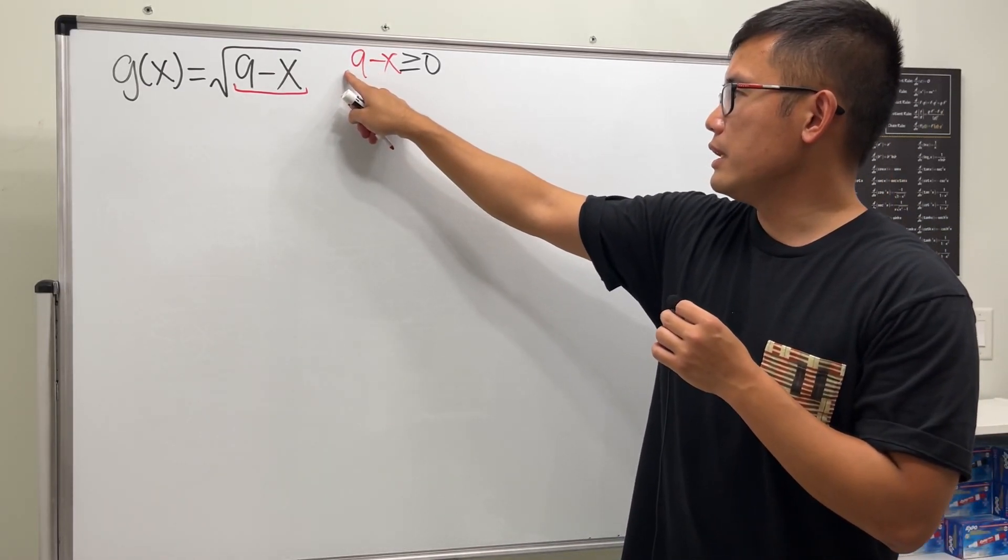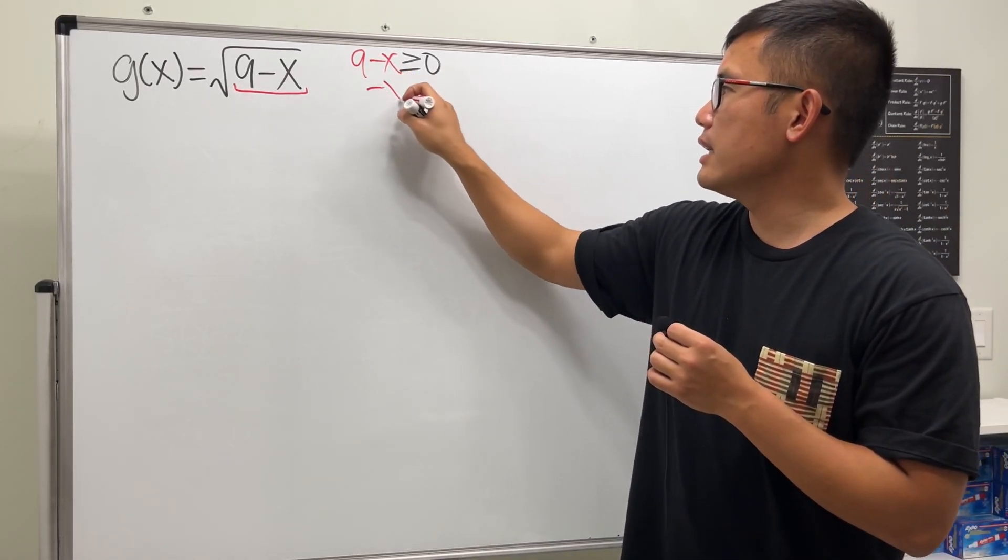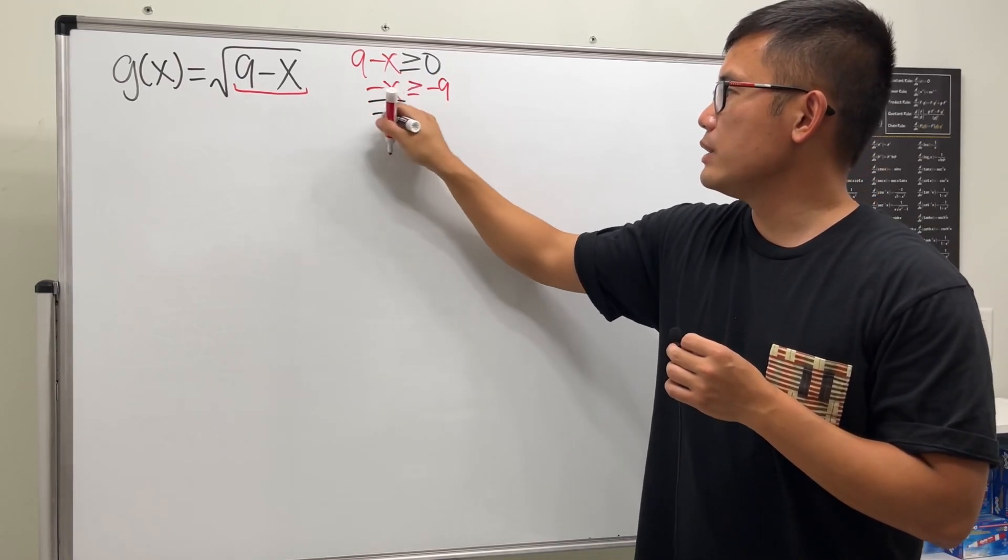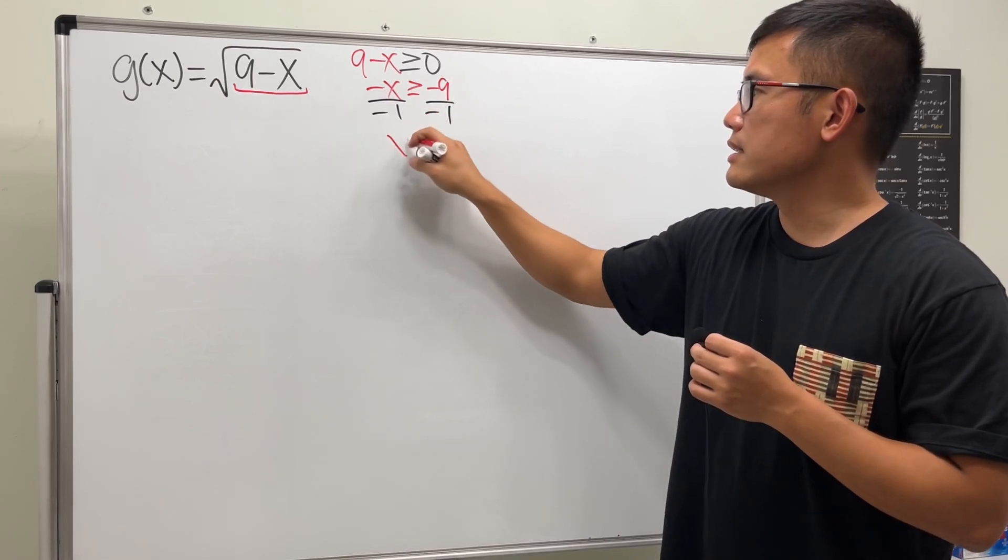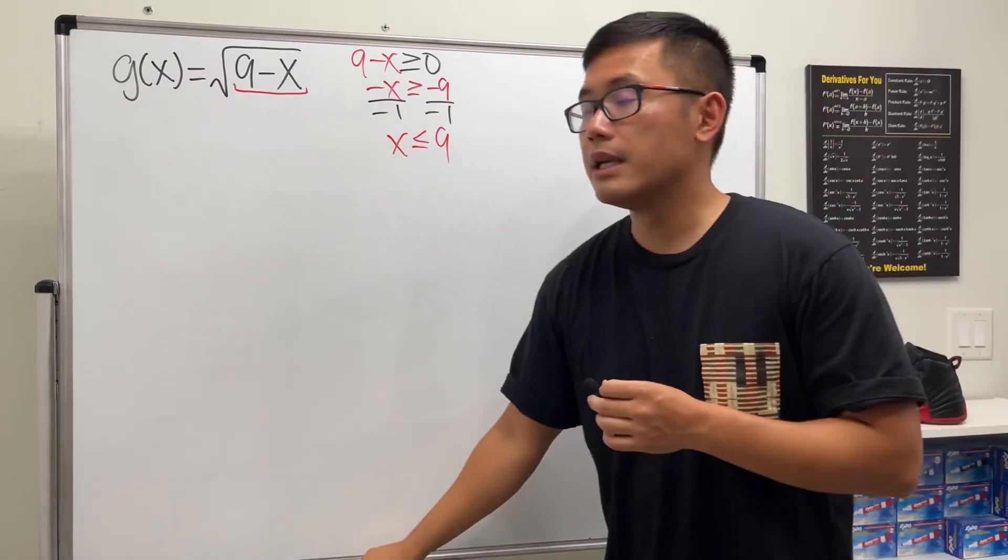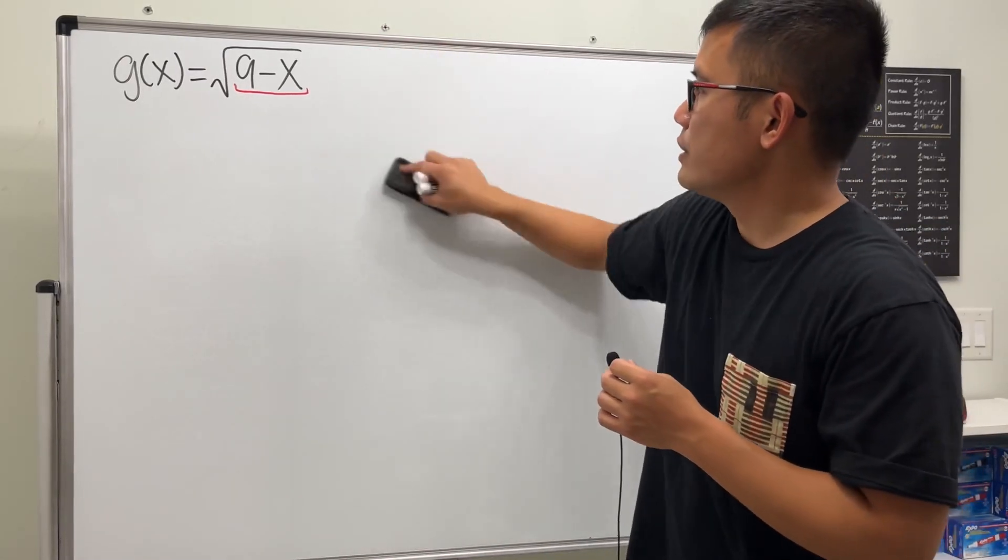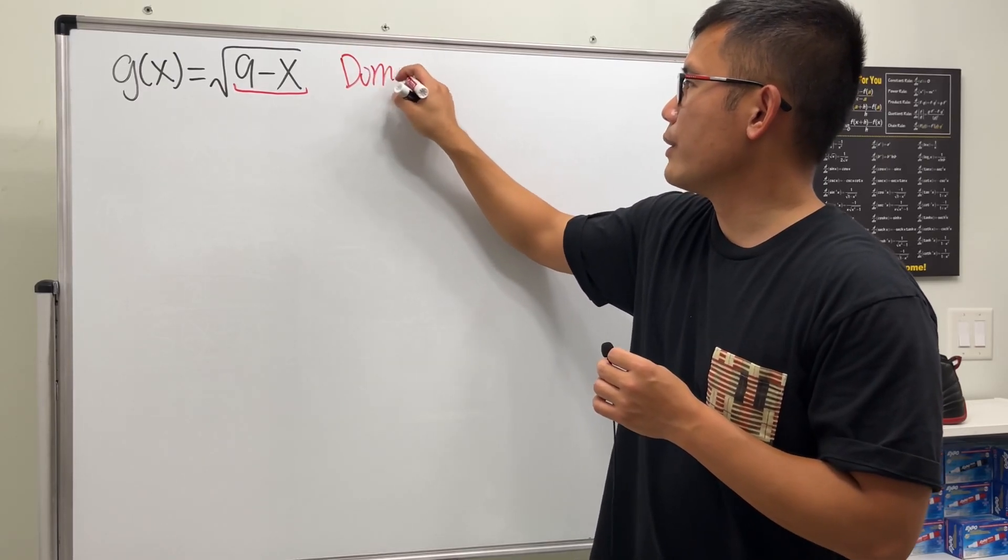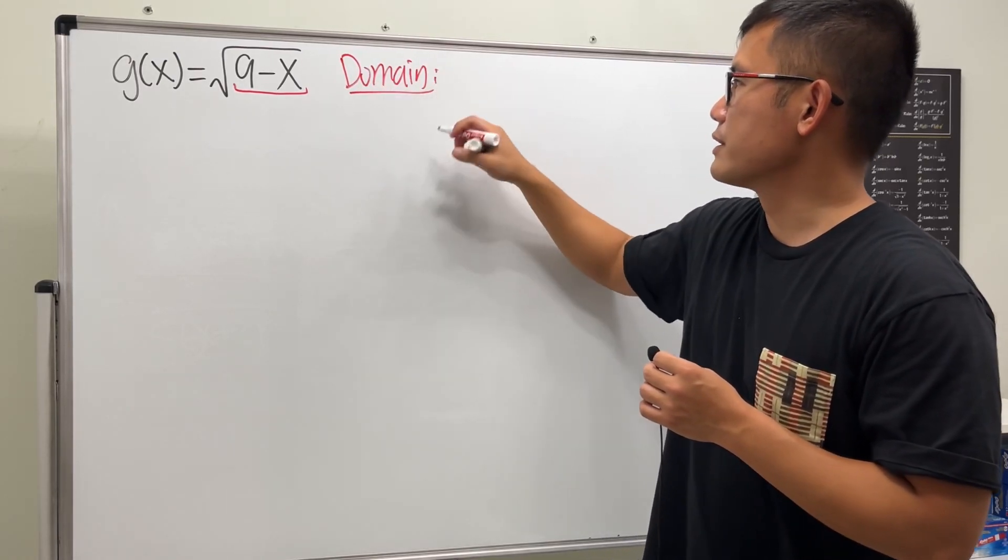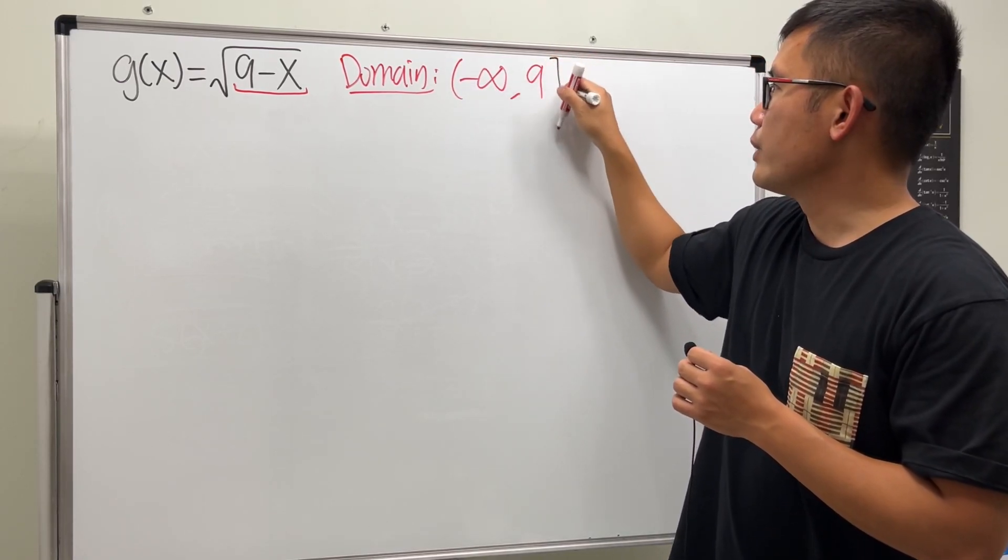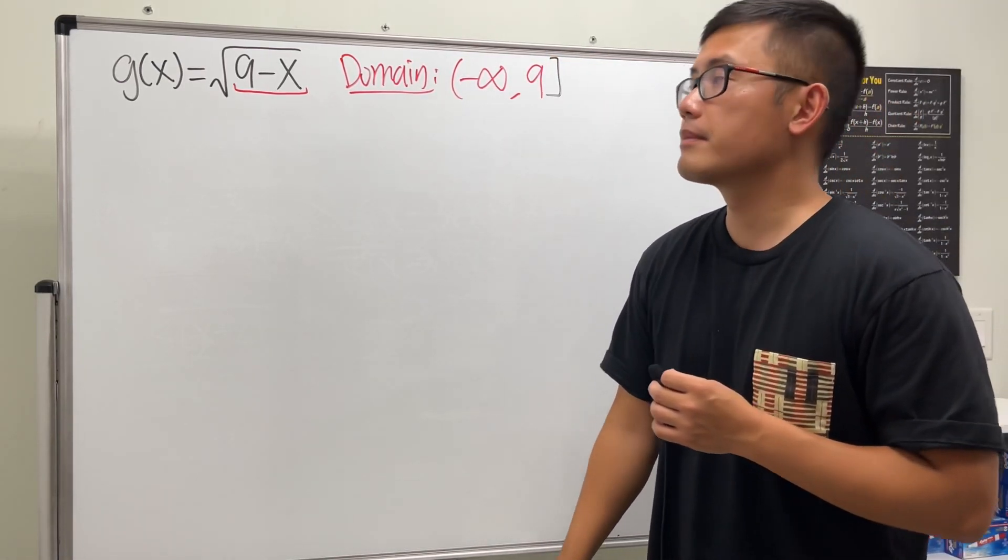Now we can just move the 9 to the other side, so we have negative x is greater than or equal to negative 9. Divide both sides by negative 1, so we see that x is less than or equal to positive 9. Make sure you flip the inequality symbol. I will erase this because otherwise I will be running out of space. So the domain is negative infinity to positive 9, including the positive 9.